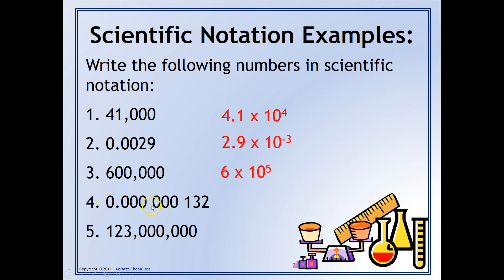For this next number, I put spaces in between just to make it easier to see the zeros. We still need to get that decimal point in between the one and the three. This number is definitely much less than one, so we're going to have a negative exponent. We're going to move this decimal point seven places to the right, so our answer is going to be 1.32 times ten to the minus seven.